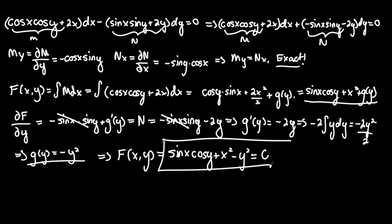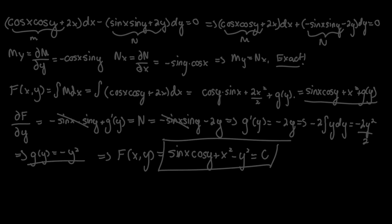Since this is not an initial value problem, we are not given a point for this function, so we can confidently assume that this would be c on the right side. So our answer for this equation is sine x cosine y plus x squared minus y squared equals c. If you have any questions, please leave in the comments below, and good luck.